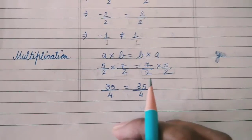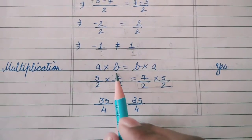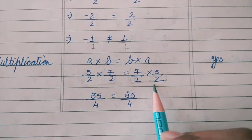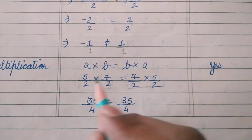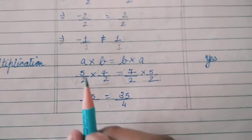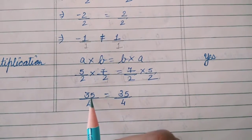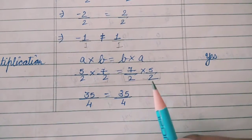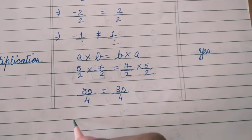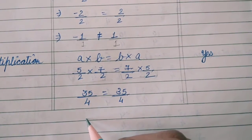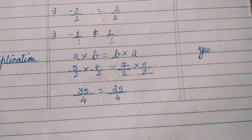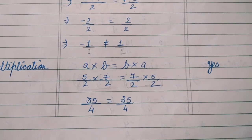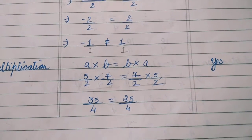For multiplication: A multiplied by B equals B multiplied by A. We multiply numerator by numerator and denominator by denominator: 5 times 7 is 35, 2 times 2 is 4, giving 35 upon 4. On the other side: 7 times 5 is 35, 2 times 2 is 4, also giving 35 upon 4. Both sides are equal and rational, so under multiplication, our commutative property is satisfying for rational numbers.